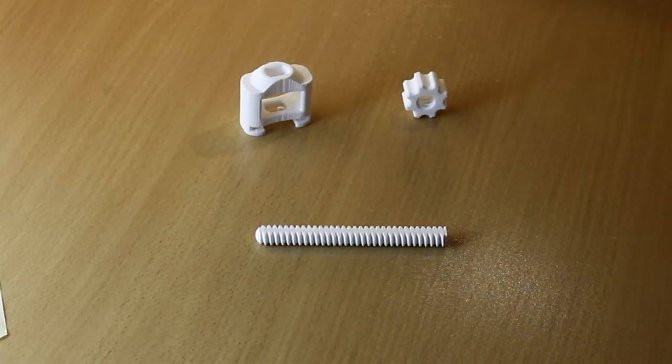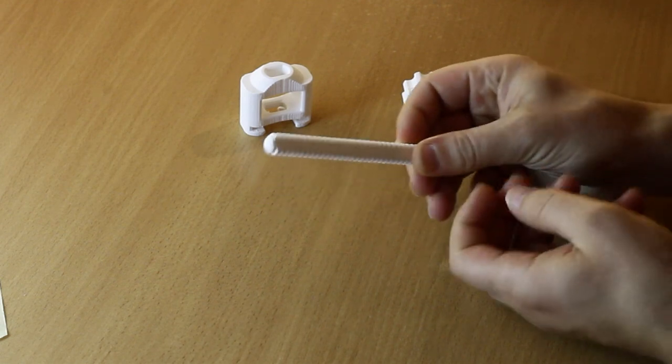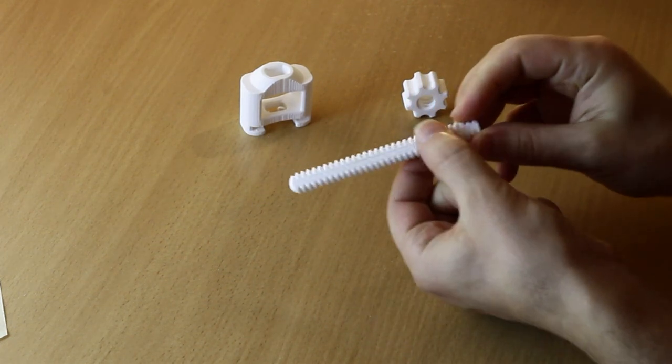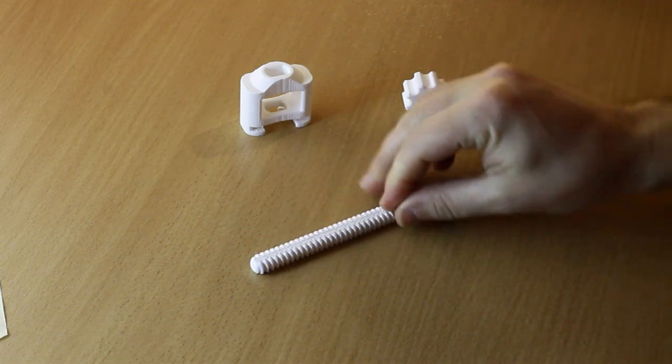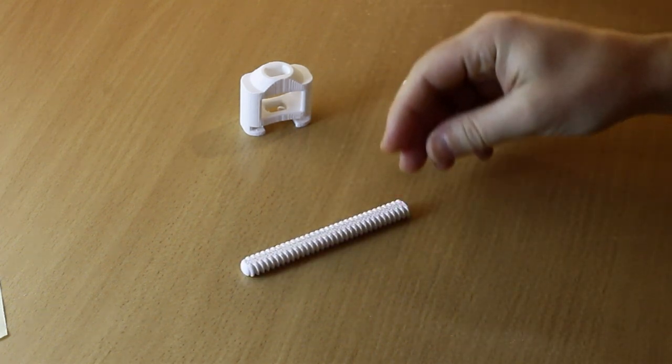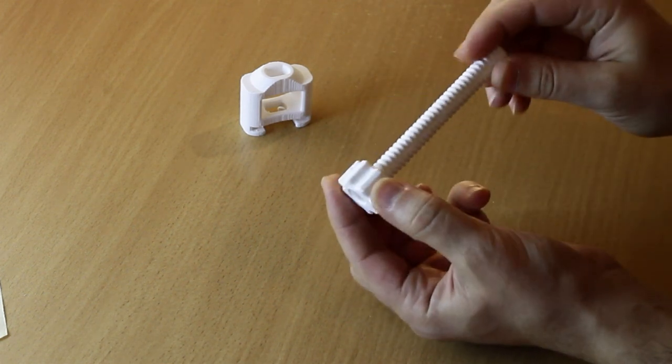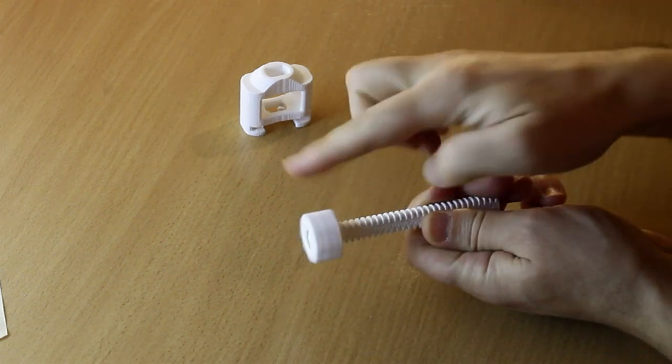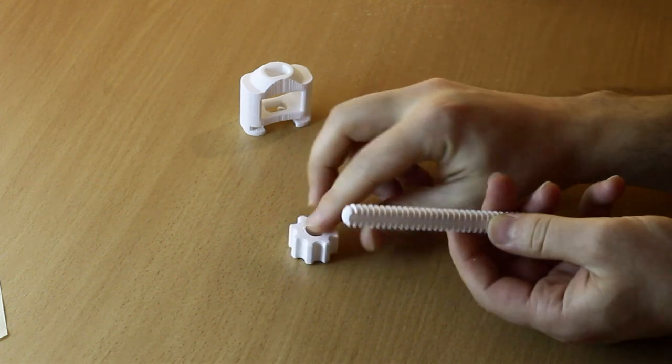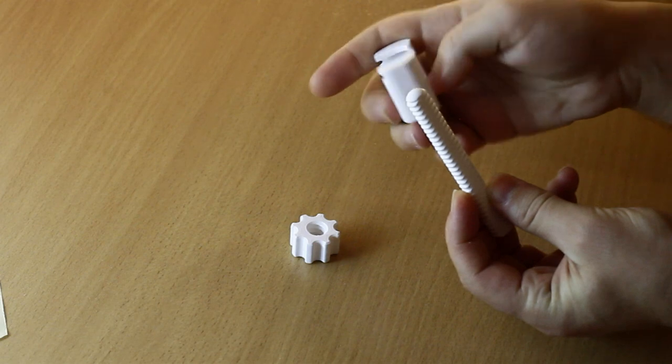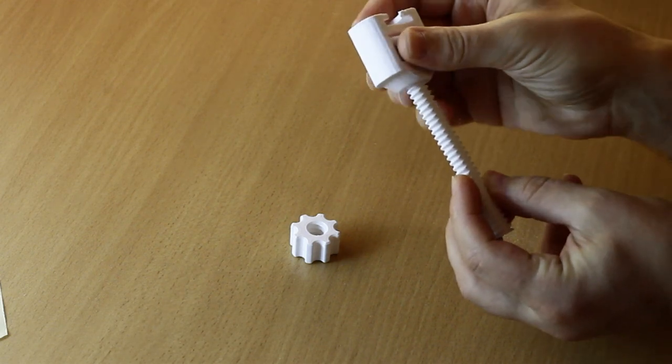So these are the printed parts. This is the screw that has two flat parts on each side because it's easier to print like this. This is the wheel which threads beautifully. And this is a rounded part. It goes like this.